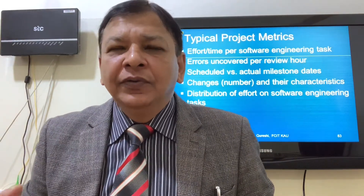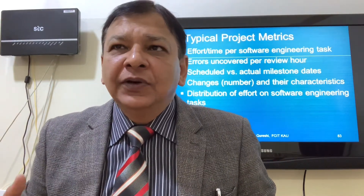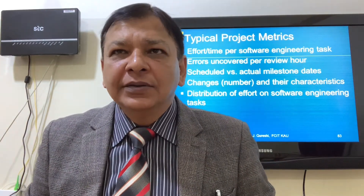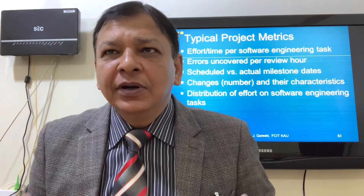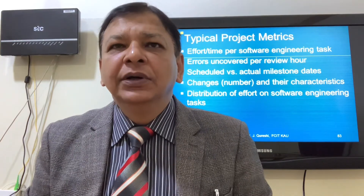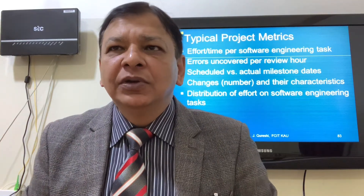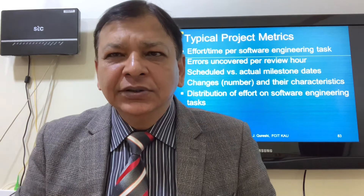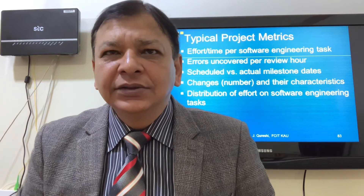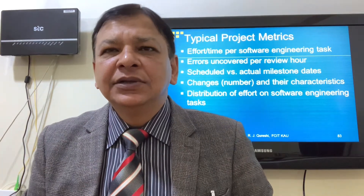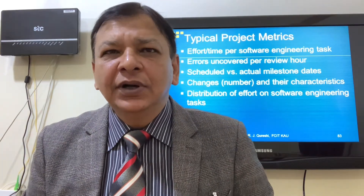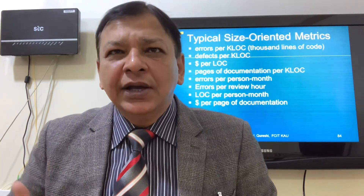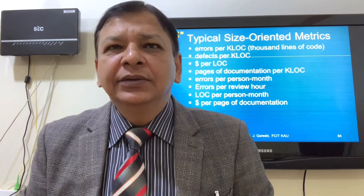Typical project metrics include: effort over time per software engineering task, errors uncovered per review hour, schedule versus actual milestone dates, number of changes and their characteristics, and distribution of effort on software engineering tasks.